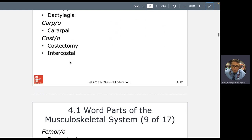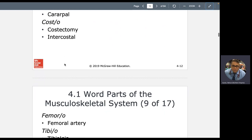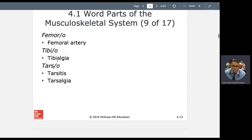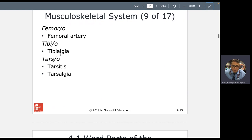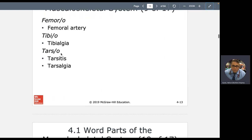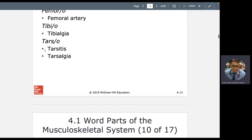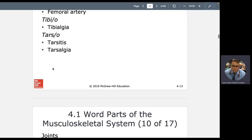Intercostal or intercostal space. Your ICS. That is the spaces, al, pertaining to, inter, between your cost, your ribs. Femoral artery, al, pertaining to your femur, the largest bone in your body. That's your largest and longest and heaviest bone in your body, which is in your thigh. Your tibia, nice to know. It's in your lower leg. Tibialgia. Your tarsal bones, al, pertaining to your ankle bones. So you could have tarsitis, tarsalgia in your ankle. Tarsal bones are in your ankle. Carpal bones are in your wrist.